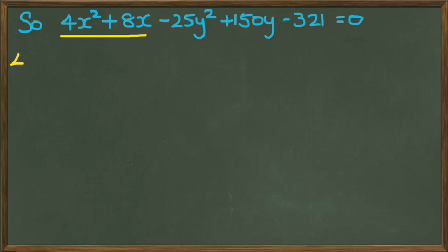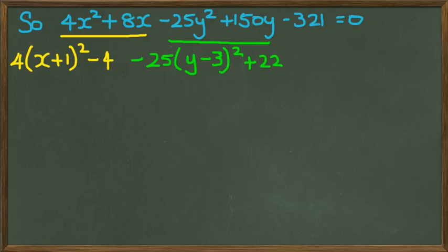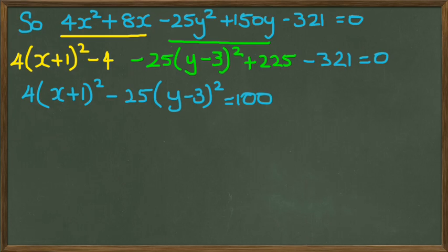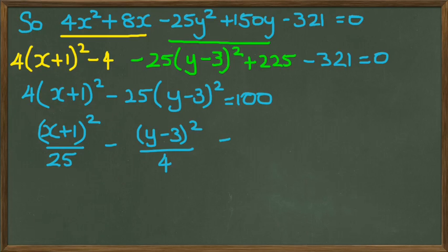Okay. So, we had already completed the square in the previous slide for the x's and for the y's. So, rearranging this, I'm going to collect all the constants and it'll equal 100. And if I divide by 4 and 25, I should end up with this equation right here.